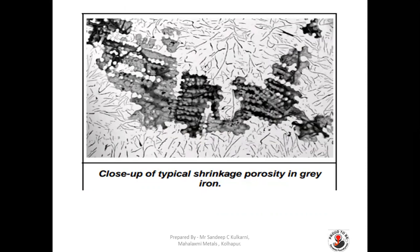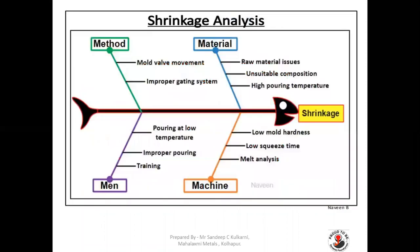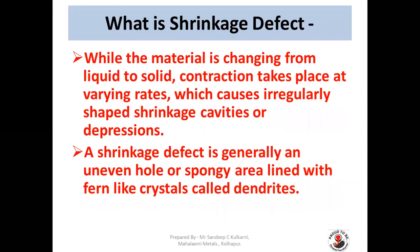In this picture you are again seeing some micro structures related to porosity and shrinkage defect. This is a typical shrinkage porosity in gray cast iron. While the material is changing from liquid to solid, contraction takes place at various rates, which causes irregularly shaped shrinkage cavities or depressions. A shrinkage defect is generally an uneven hole or spongy area lined with fern-like crystals called dendrites. This is the definition of shrinkage.